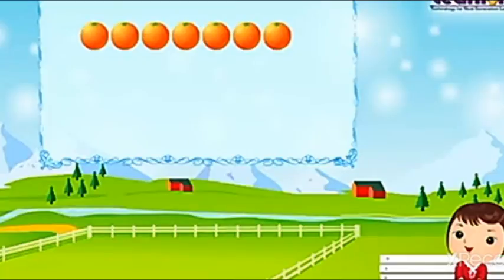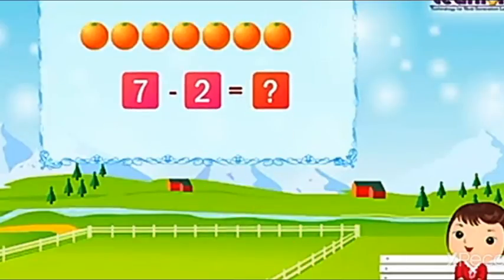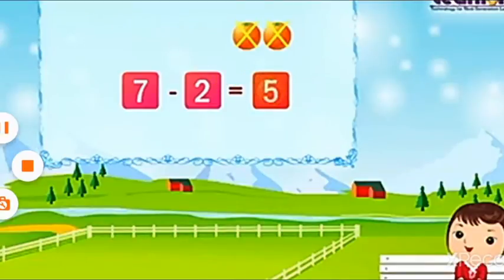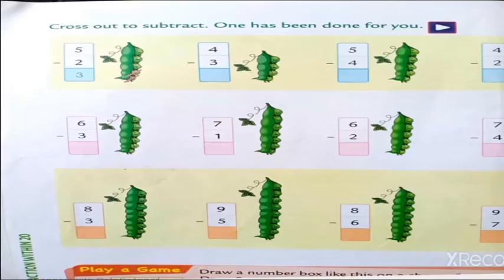There are 7 oranges. If we take away 2 from that, 7 minus 2, we count and get 5. 7 minus 2 is equal to 5. Subtraction means to take away — let's start practice.